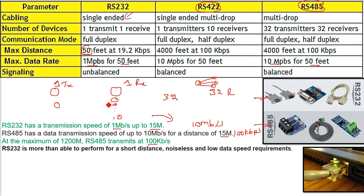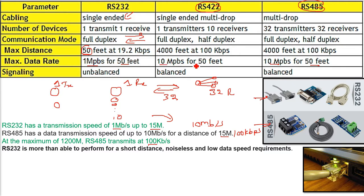RS-232 is full duplex — both parties can send and receive at the same time. RS-422 and RS-485 support both full duplex and half duplex. Half duplex means both parties are talking but one at a time. Full duplex means both parties are talking at the same time.